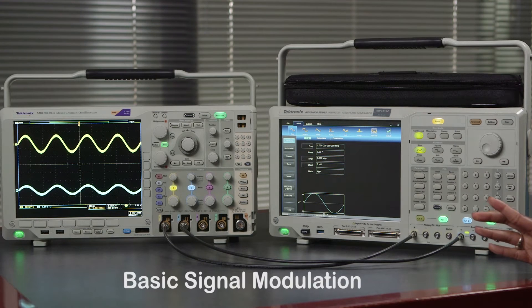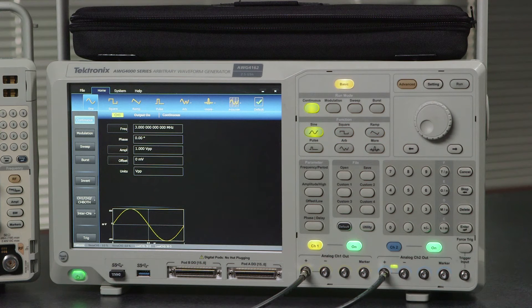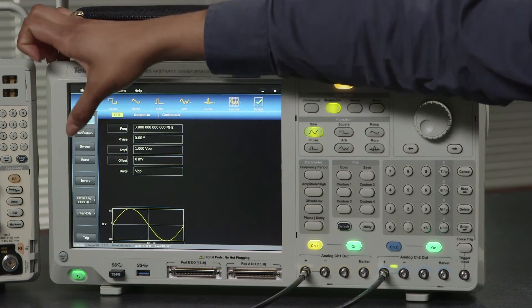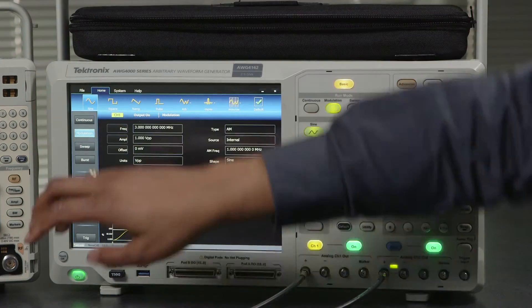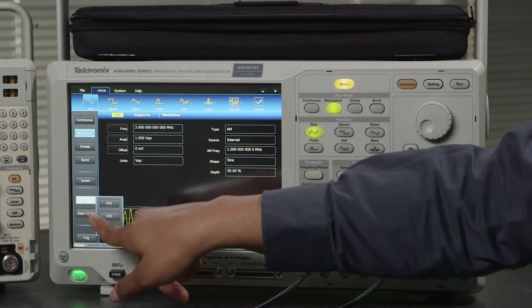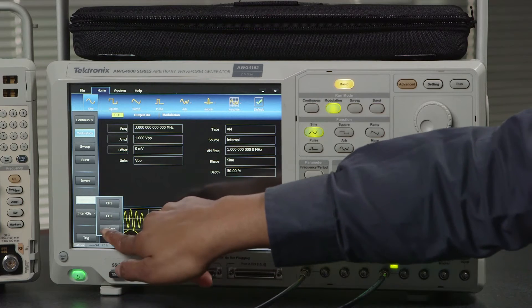Now this is pretty basic so what we'd like to do now is try some signal modulation. To modulate a signal we can just go straight to the modulation scheme here. Now we can see both channels easily by pressing the channel 1, channel 2, or channel both button and choosing channel both here.